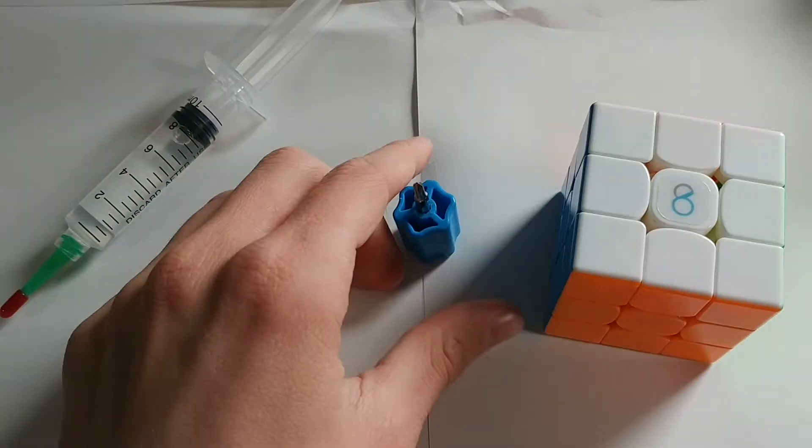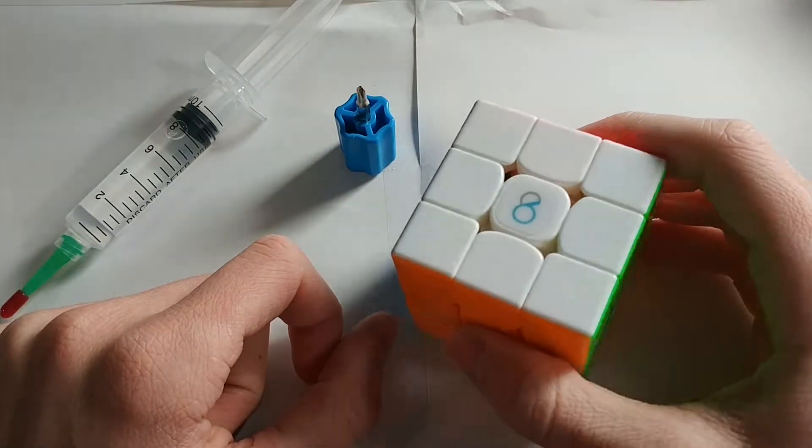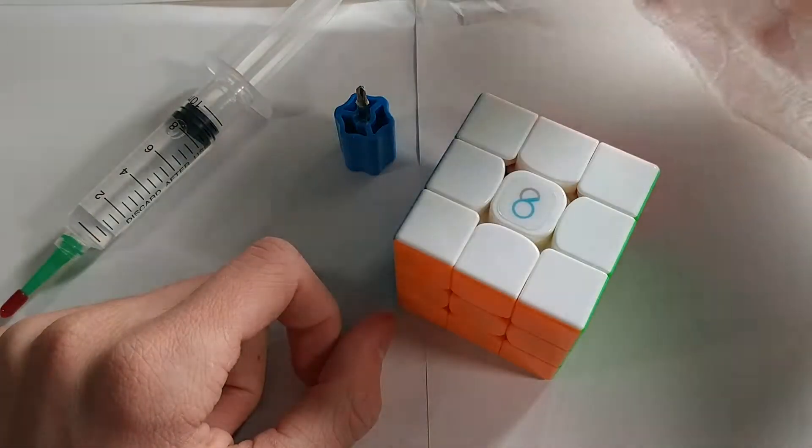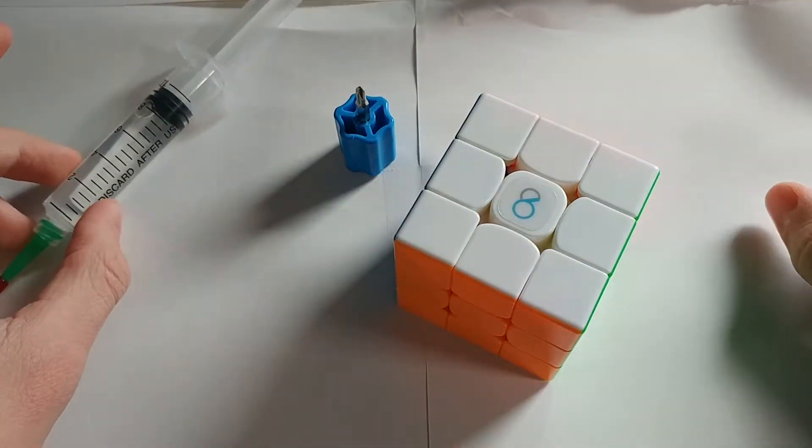lubricant, obviously, a screwdriver, and your Rubik's Cube. It also might be a good idea to have some paper towels nearby in case you get lube on your hands or on your table.